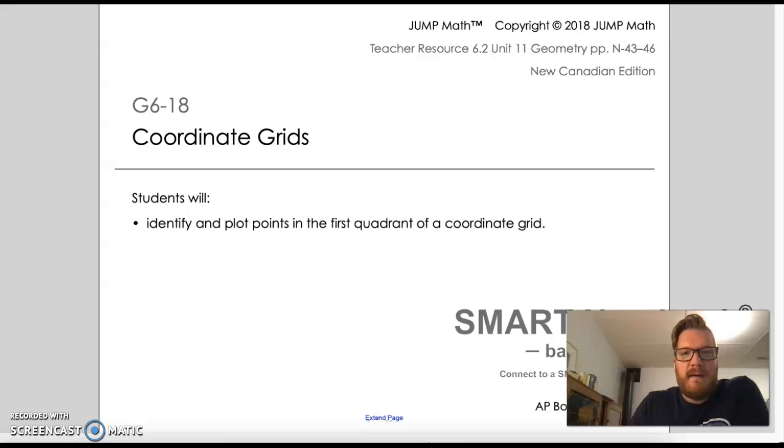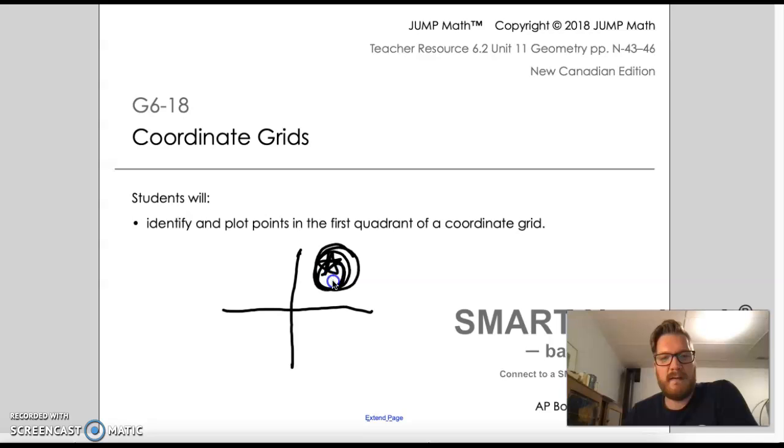Now, at the risk of getting kind of confusing, there are actually four quadrants. In a coordinate grid, and this is a real rough drawing, the coordinate grid that we're talking about is the stuff that's in here, in the top right. There are three other ones that we're just going to not talk about until you guys get a little older.